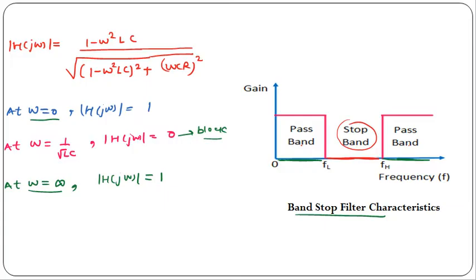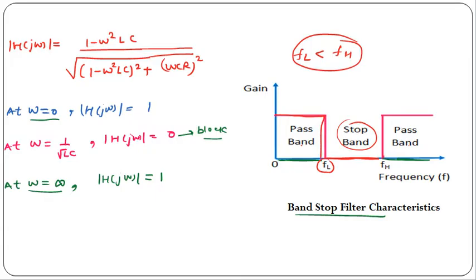For the band stop filter, the cutoff frequency of the low pass filter should be less than the cutoff frequency of the high pass filter. This is the characteristics of the low pass filter and the high pass filter combined. You have to remember this important point.